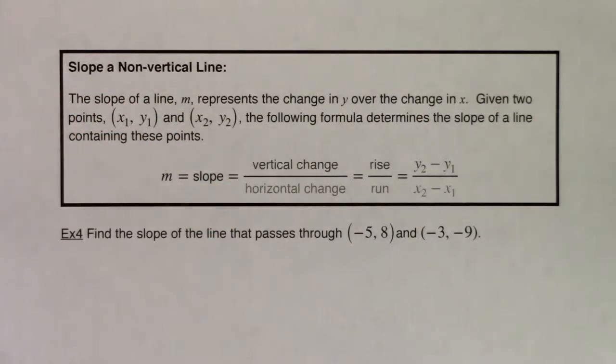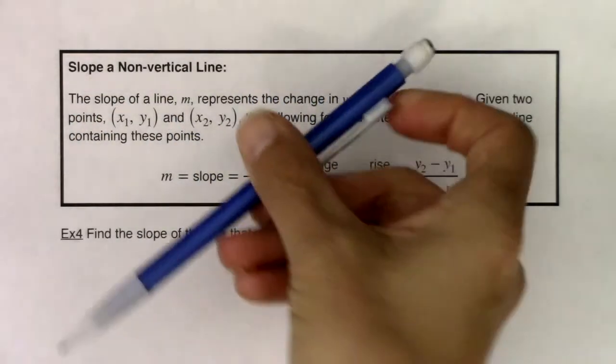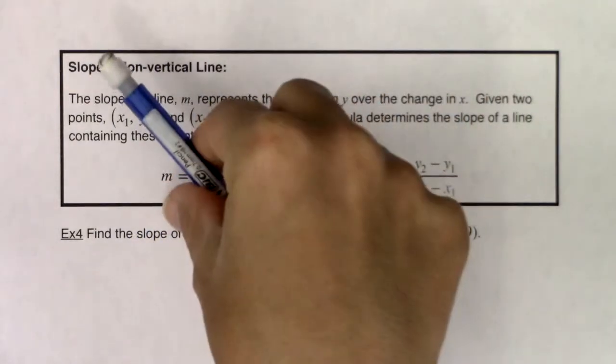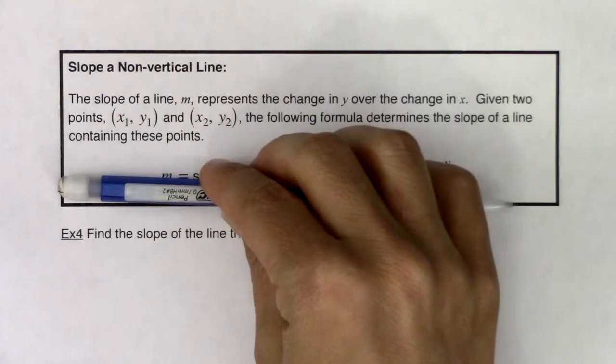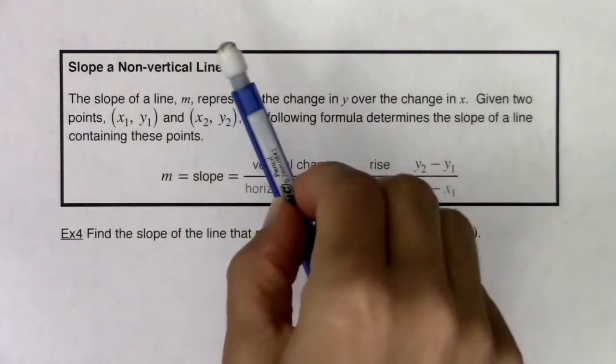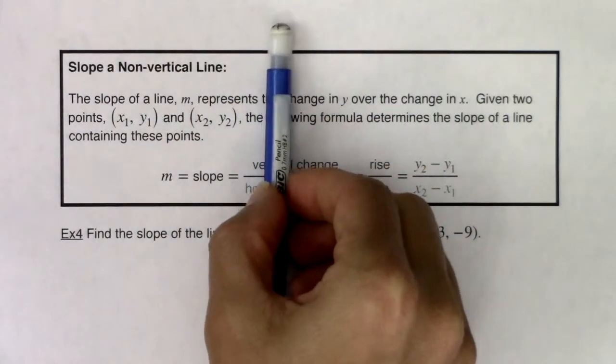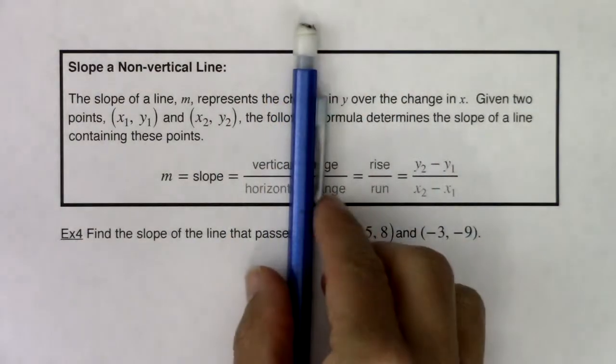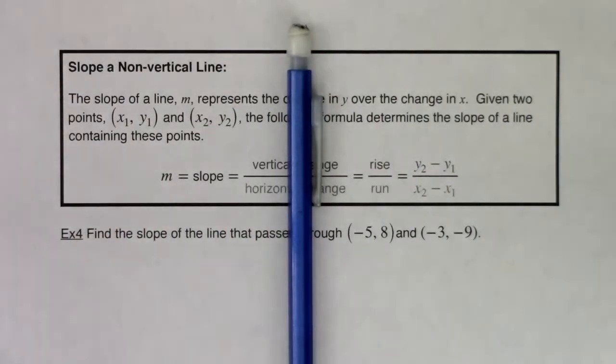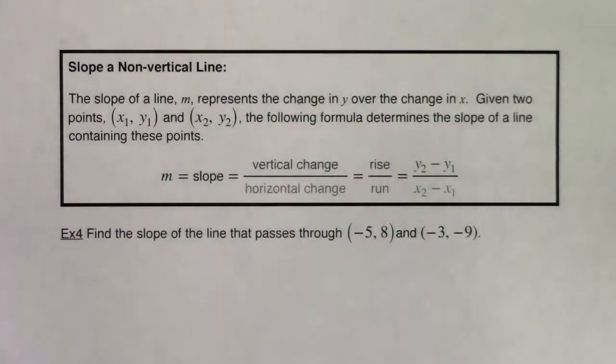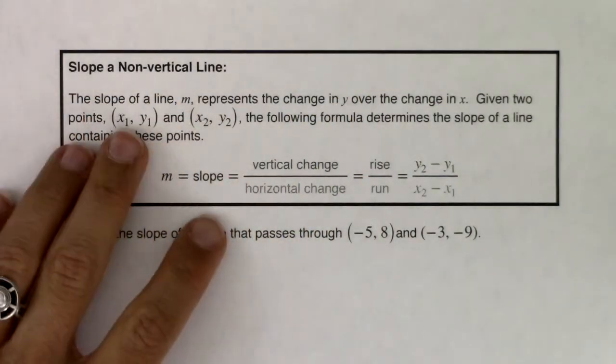Now when I say a slope of a non-vertical line, it can be a positively sloped line, a negatively sloped line, maybe it's even horizontal. But in terms of non-vertical lines, what I'm saying here is I'm talking about all lines that aren't vertical, that don't go up and down. When we have vertical lines, they've got their own slope issues, which we'll talk about in just a little bit. But for the slope of a non-vertical line, the slope of a line, m,